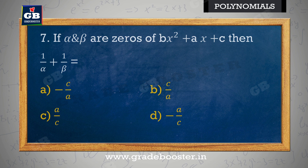If alpha and beta are zeros of bx² + ax + c, then 1/alpha + 1/beta is equal to: yadi alpha aur beta, bx² + ax + c ke zeros hain, to 1/alpha + 1/beta = a) −c/a, b) c/a, c) a/c, d) −a/c.